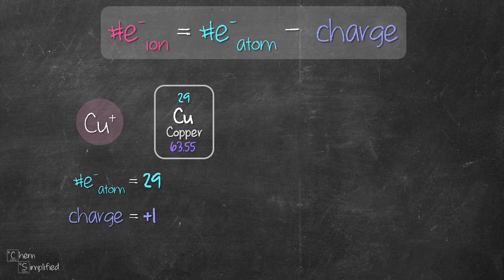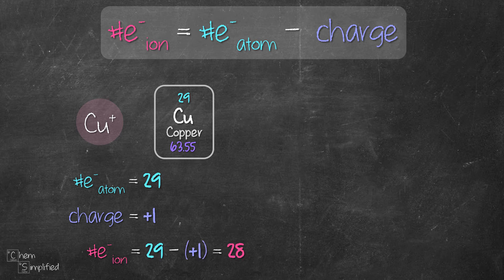We take the number of electrons for the atom which is 29, subtract the charge which is plus 1, and that gives us 28 for the number of electrons in Cu+ ion.